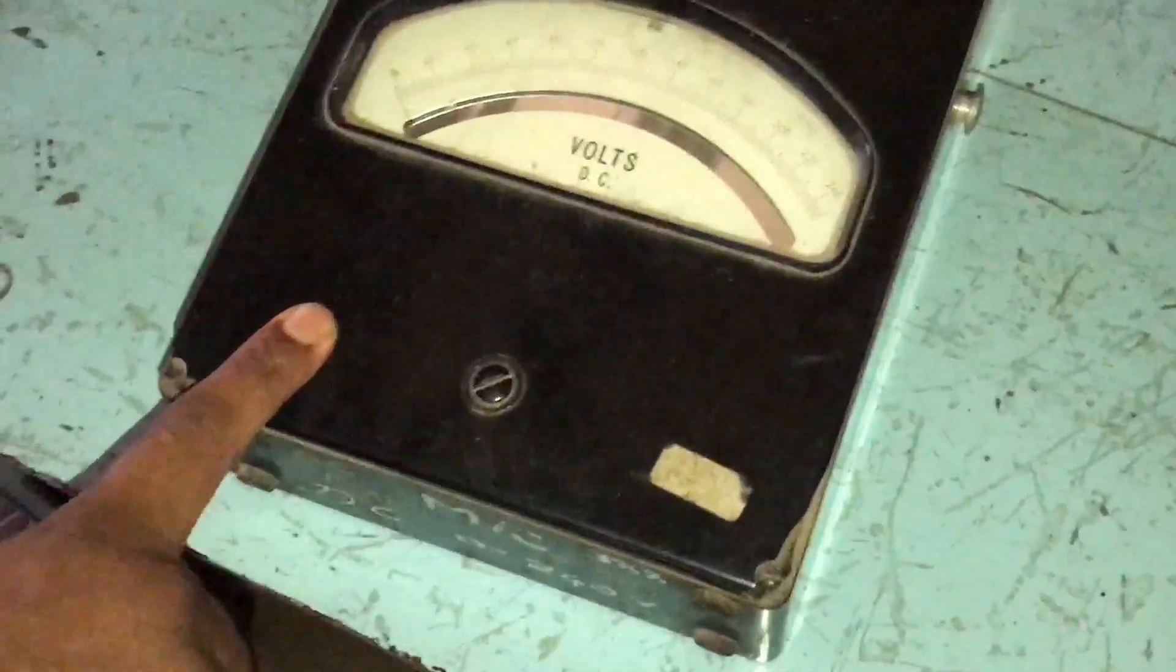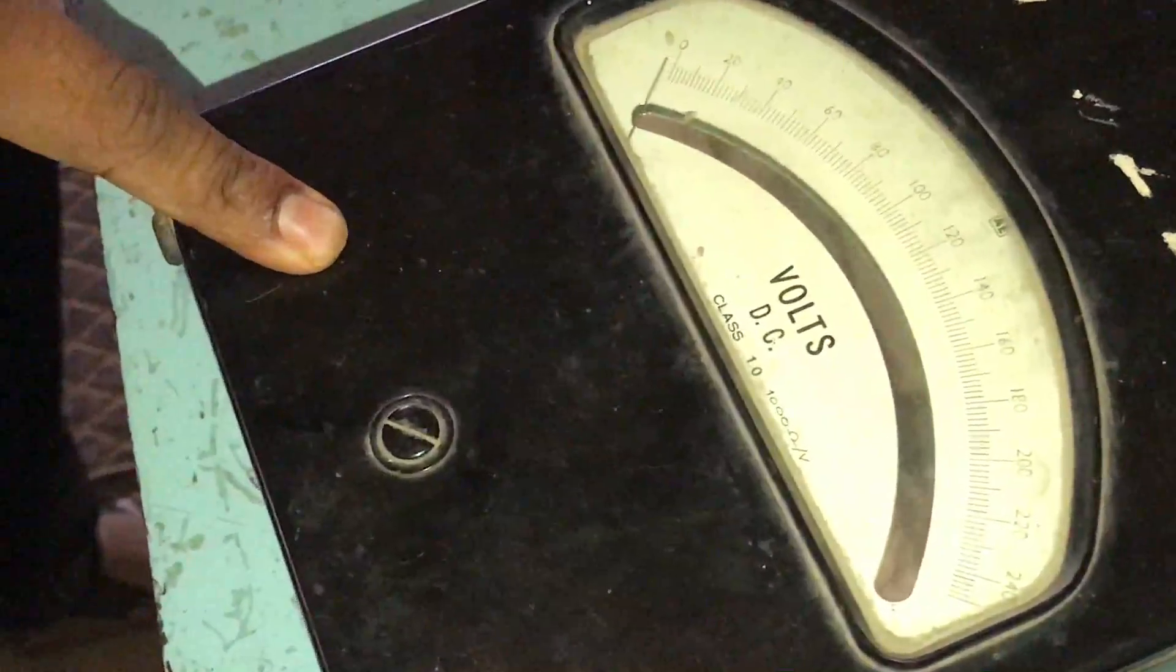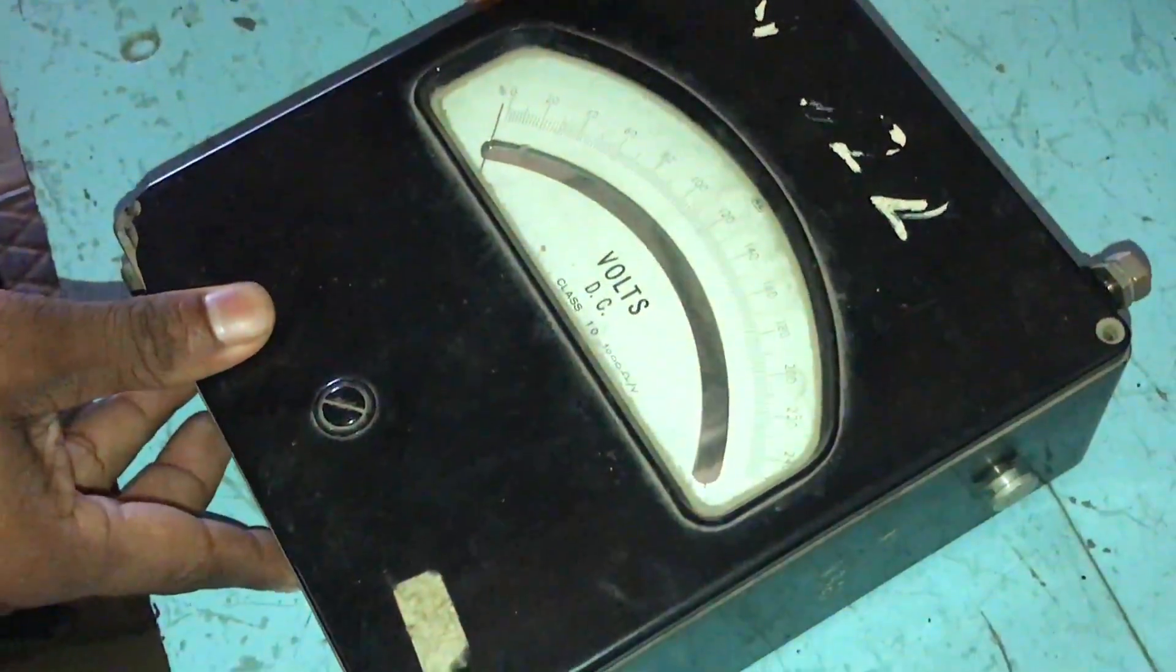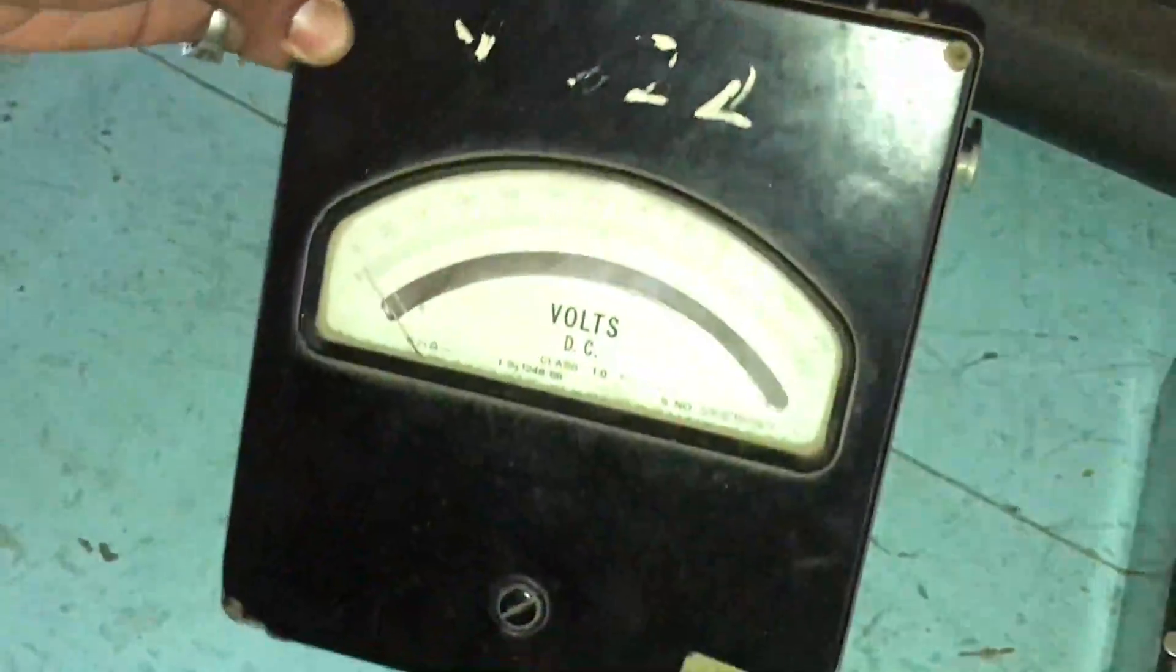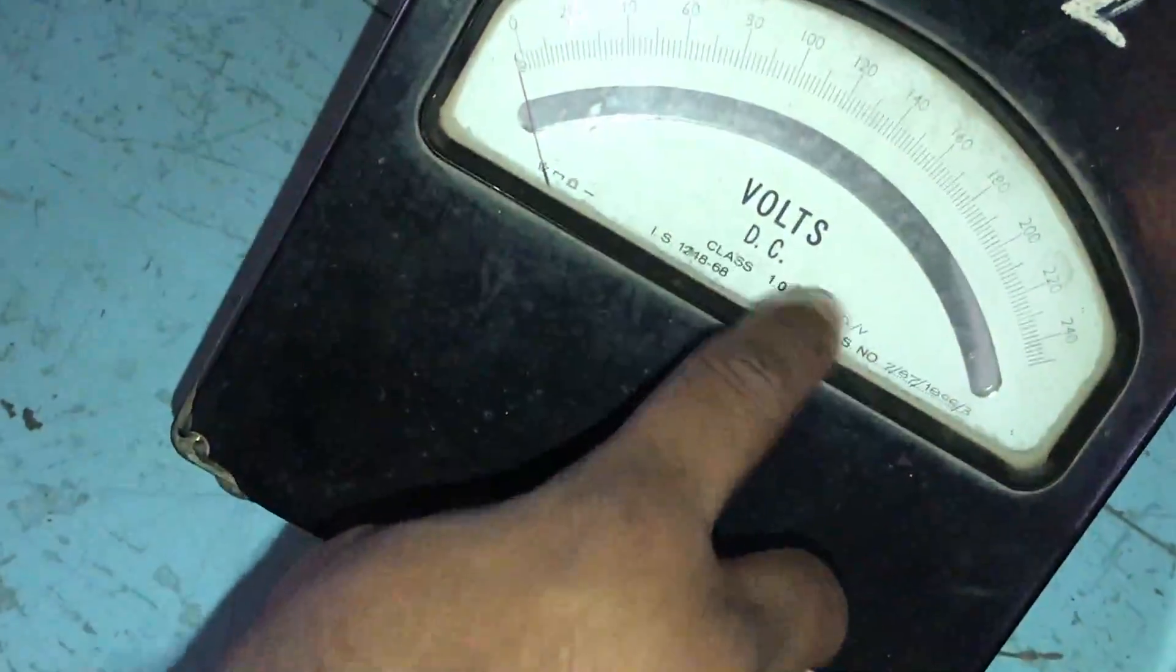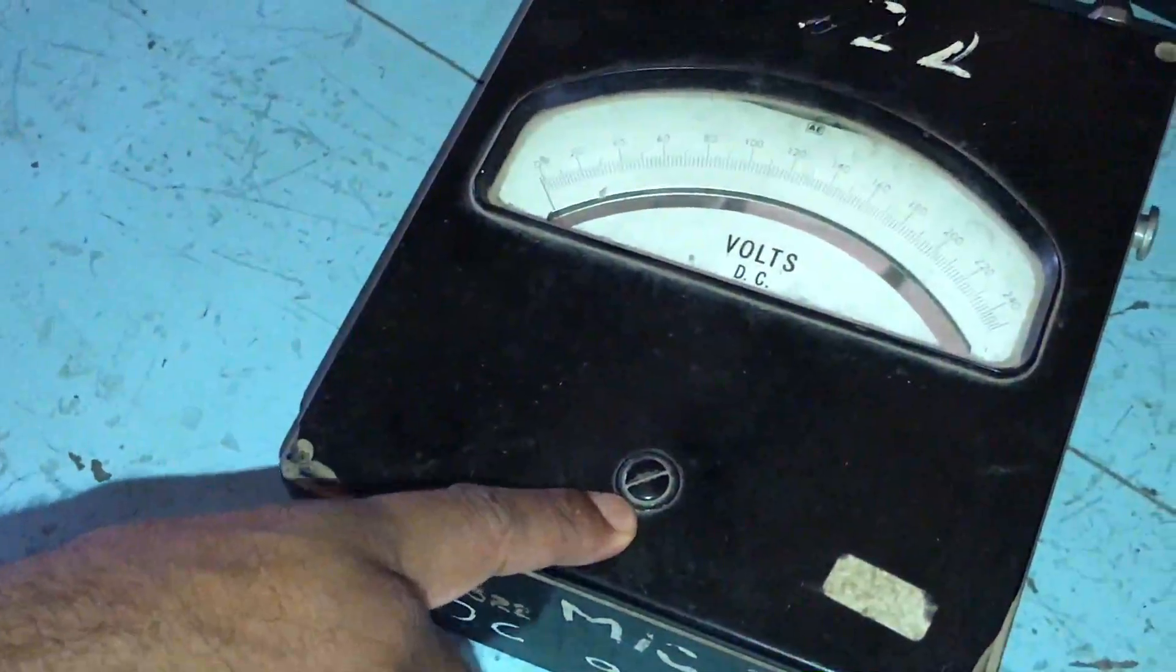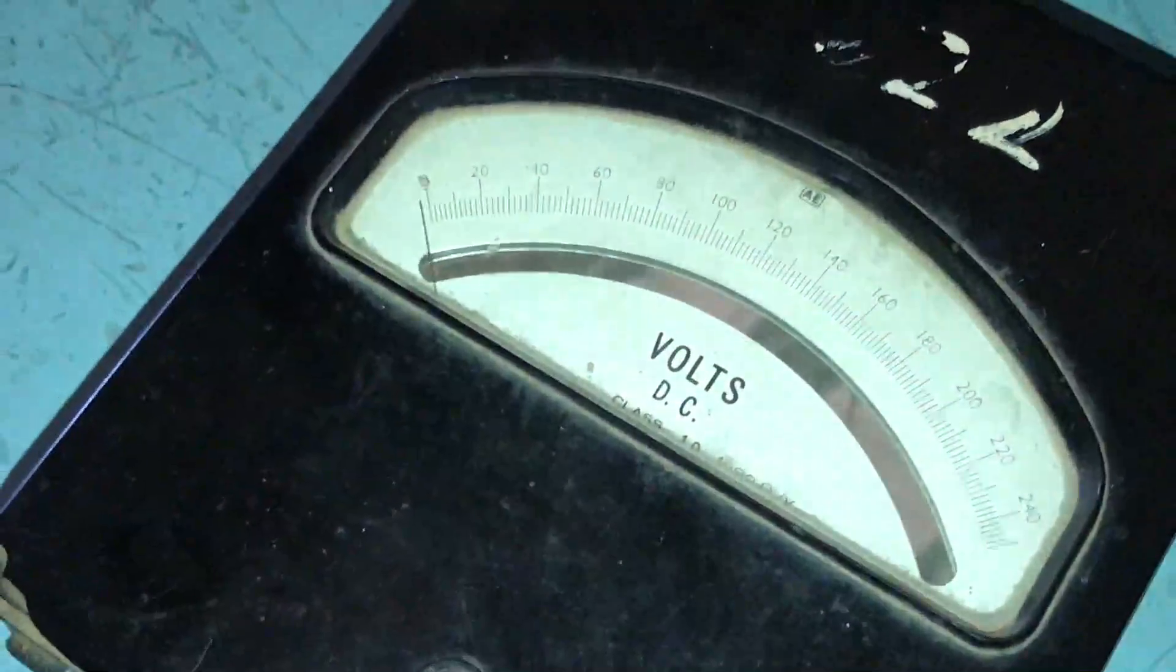This is the voltmeter. It is used for measuring supply voltage. This is always connected across the load. It has two points: one is positive and negative. It is used only for DC supply. It is used to adjust the dial to zero.